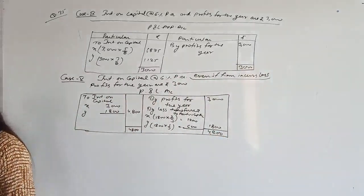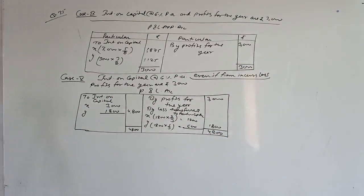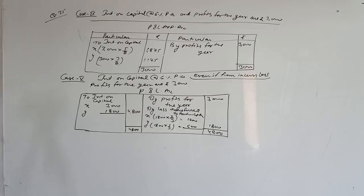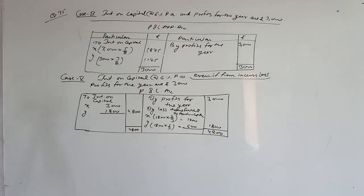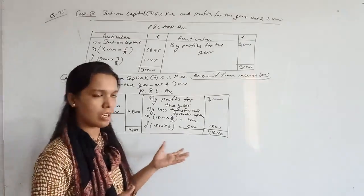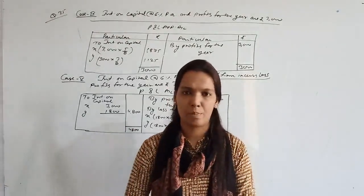In this question we covered all cases of how interest on capital is treated: when deed is silent — no interest; when there is a loss — no interest; when profits are insufficient — distribute available profits in interest ratio; when profits are sufficient — full interest given; and when interest is charged against profit — full interest must always be given regardless of profit or loss. This was question number 35. In the next video we will look at journal entries related to these types of questions.